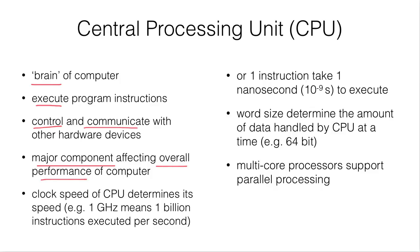Actually, the speed of a CPU is determined by the clock speed. For example, 1 GHz means the CPU can process 1 billion instructions per second. Or we can put it this way: one instruction will take only 1 nanosecond to execute. 1 nanosecond equals 10 to the power of minus 9 seconds.